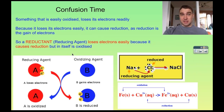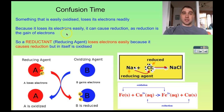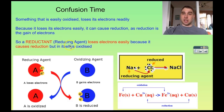Conversely, something that is easily oxidized loses electrons easily. Because it's losing electrons easily, it causes reduction — remember, reduction is the gain of electrons. So a reductant, which is a portmanteau of 'reducing agent', is something that loses its electrons easily.